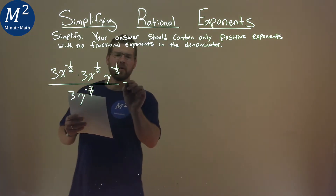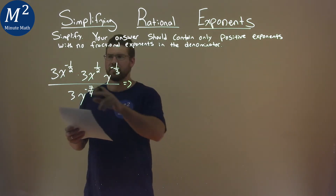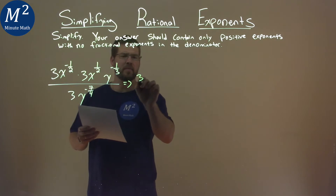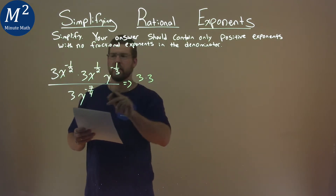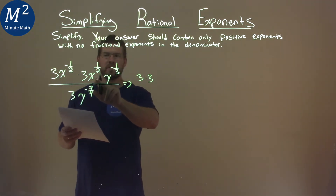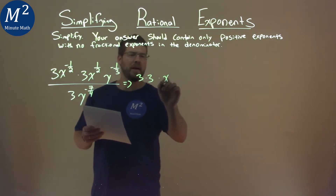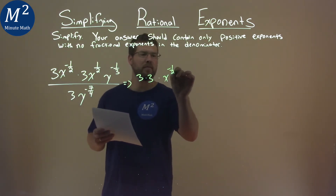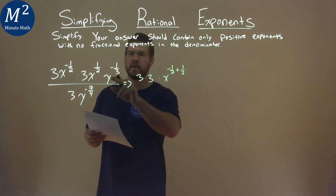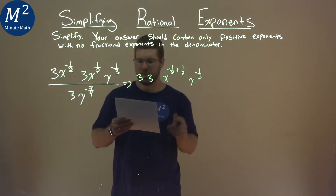Let's rewrite some of the stuff and reorganize it and do what we can. Put the coefficients up front, and we have 3 times 3. Then for the same base, we have x and x here — our rules say we have to add the exponents, so we have a negative one-half plus a positive one-half.